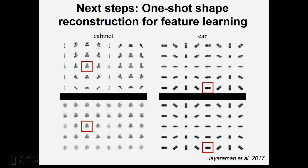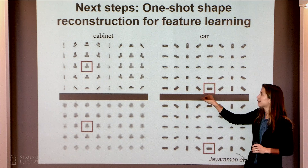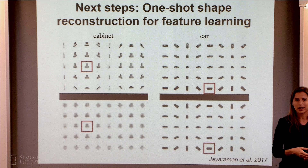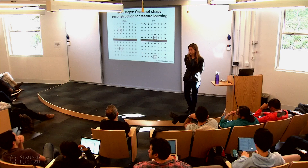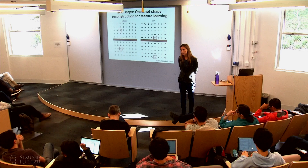Moving forward to ongoing work, we're thinking not just about predicting the relationship between pairs of views, but also predicting the entire 3D object shape. We're tasking our systems with: given one view from an unknown viewing angle, can the system reconstruct the entire view grid — an image-based representation of the 3D shape?